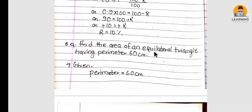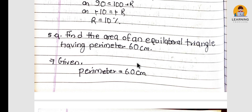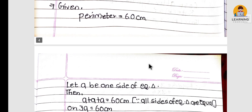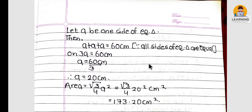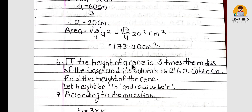Find the area of an equilateral triangle having a perimeter of 60 cm. Given: perimeter = 60 cm. Let 'a' be one side of the equilateral triangle. Then a + a + a = 60, so a = 20 cm. Area = (√3 / 4) × a² = (√3 / 4) × 400 = 173.20 cm².